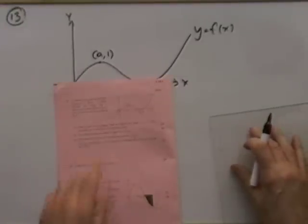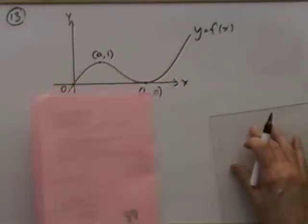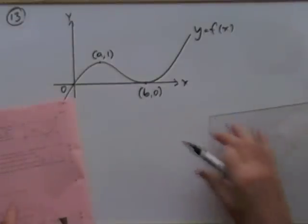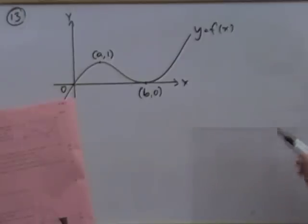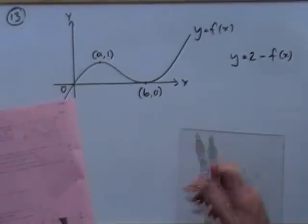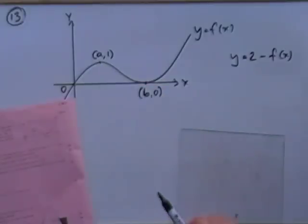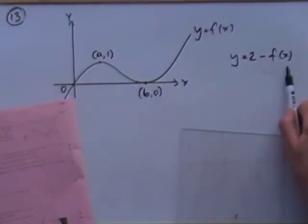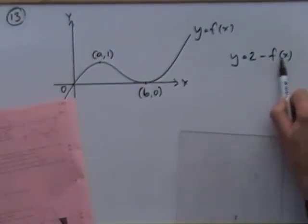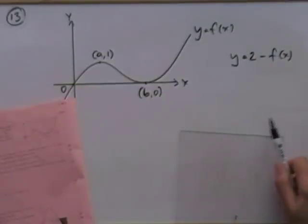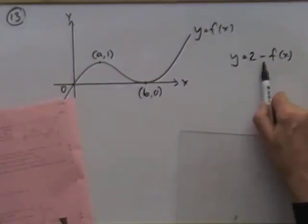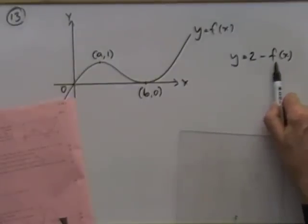Question 13: transformation of graphs. Sketch the graph of y equals 2 minus f of x. If you're doing it numerically, just altering those coordinates: the horizontal position doesn't change because there's no alteration inside. The alterations take place outside, and the new y coordinate is 2 minus the old y coordinate.